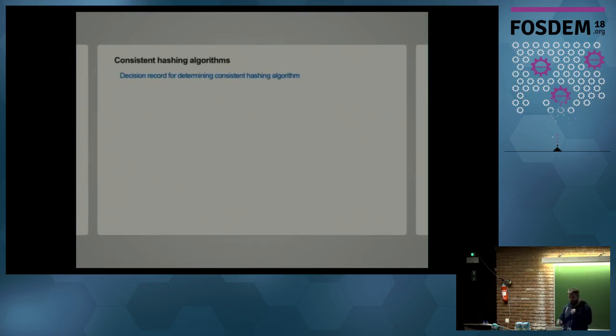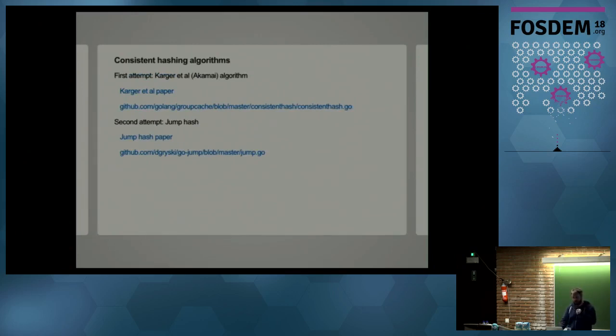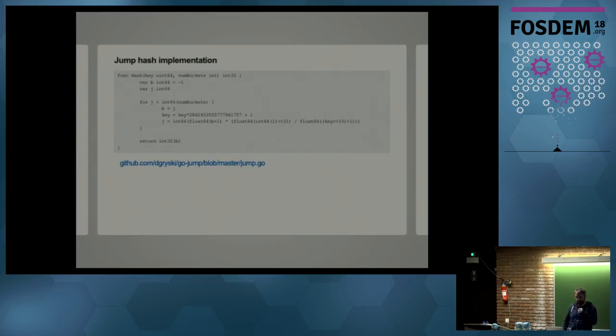So I looked into consistent hashing algorithms. There's a decision record on the GitHub repository for this project that goes into more detail. And I'll share the slides afterwards. Basically, the first one I looked at was the Karger algorithm. And then I kept iterating and looked at JumpHash. I'd encourage you to look at the papers here. I won't explain them in detail right now because I don't have the time. But I'll just show you the JumpHash implementation, which I think is super elegant. JumpHash is an improvement over the Karger algorithm because it uses less memory. And it's a lot faster. And the thing I really like about it that stood out to me, was that it uses this magic constant, which is a 64-bit congruential random number generator. And it uses this magic constant to make this faster. So Damien Grisky has an implementation of this. And this is the whole JumpHash algorithm.